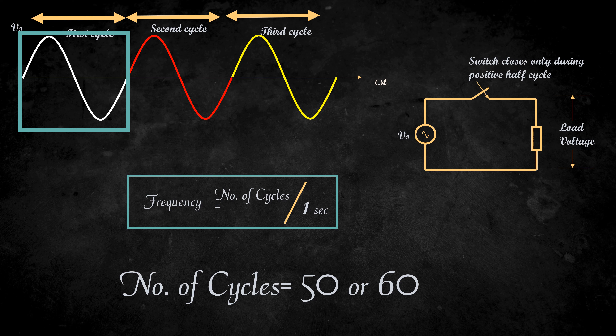Now, let's come back to our circuit. We have to design this switch in such a way that it operates very fast. I mean, it has to open and close nearly 50 times in one second. Do you think this is practically possible? Come on, let's face it — I can't even blink my eyes in this short time. That is why a switch is not a good alternative for a diode.